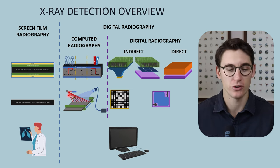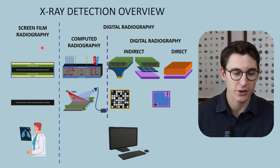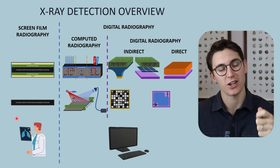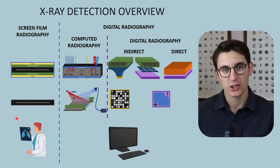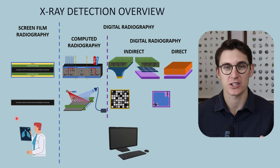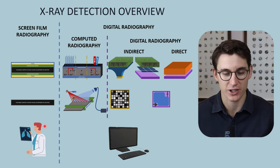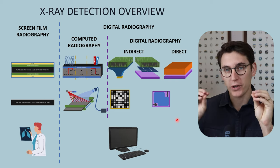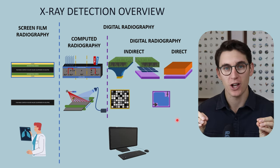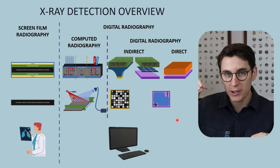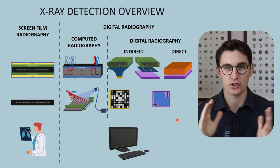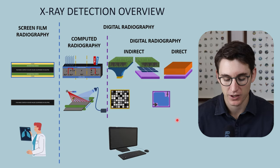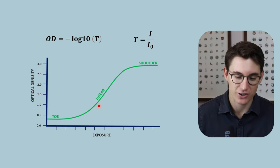Well when we look at this overview we can see that screen film radiography creates a physical copy that we cannot manipulate once we've developed that film. So we need to know the characteristics of that screen film prior to taking the x-rays. In digital radiography once we've created an image with grayscale values for each pixel we can then mathematically manipulate those grayscale values in order to change our image. We've got some leeway after we've developed our image.